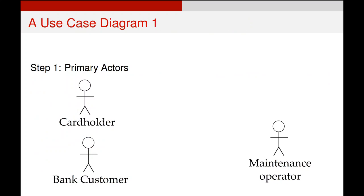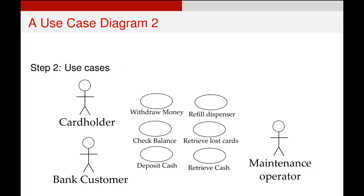Starting out, these are our primary actors. The maintenance operator you could argue is a secondary actor as well, but I would argue they are a primary actor because they will be using the system quite a lot. Now we add our use cases — you can see there's a variety of them. This is all very high level; 'Withdraw Money' will have lots of complicated steps within it, but we don't care about that at the moment. These are just general descriptors of what actions these actors will use the system to do.